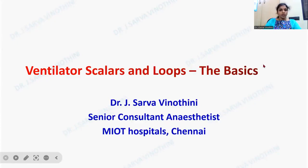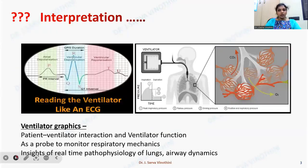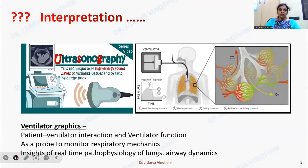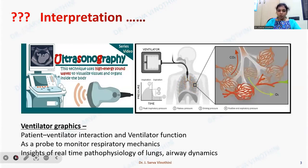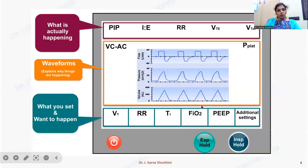Hello everyone. Today's topic is ventilator scalars and loops — the basics. I am Dr. Sarva Vinotini, consultant anesthesiologist in Chennai. Interpretation of ventilator graphics and loops is similar to reading an ECG, or sending an ultrasound wave — because the air sent via the endotracheal tube acts as a probe. It helps us monitor respiratory mechanics and gives insights into real-time pathophysiology of the lung and airway dynamics. We set parameters in the ventilator because we want something to happen, and what actually happens inside the patient is reflected by those parameters.